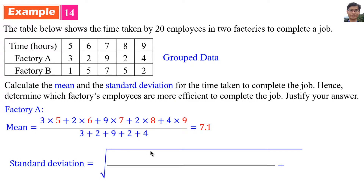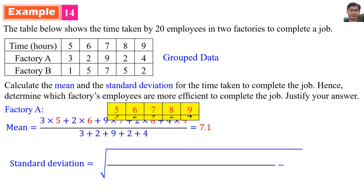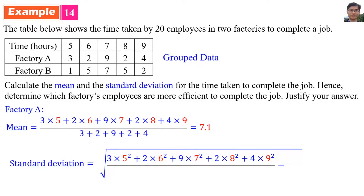Standard deviation equals the square root of variance. The variance equals 3 times 5 squared plus 2 times 6 squared plus 9 times 7 squared plus 2 times 8 squared plus 4 times 9 squared, divided by the total number of employees in Factory A.